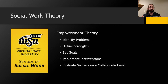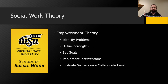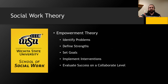Empowerment theory works with restorative justice because many of the ideas and steps to solving problems with empowerment theory work hand-in-hand with restorative justice. The five-step model of empowerment theory starts with identifying the problem — typically the cause of the suspension or expulsion — then define strengths, set goals, implement interventions, and evaluate success on a collaborative level. Restorative justice follows a similar blueprint by gathering the parties involved and examining the different sides. The goal is to find common ground and use shared experiences to build a relationship and come up with interventions to ensure all parties can continue with a healthy relationship. It's the consistency and follow-through that creates strong levels of bonding that these kids really need.